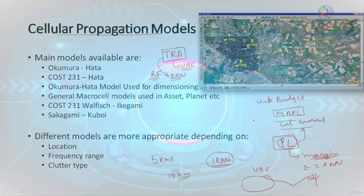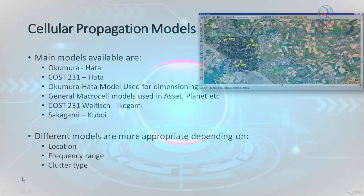A propagation model does not simply give you a margin for maximum allowable path loss. It actually simulates the environment so that before you deploy your sites, you know exactly how much the signals are going to deteriorate. Propagation models play a very important role in 5G planning — and any technology planning scenario — because once the link budget is completed, the next step is to identify a propagation model that creates a simulated environment in your network.